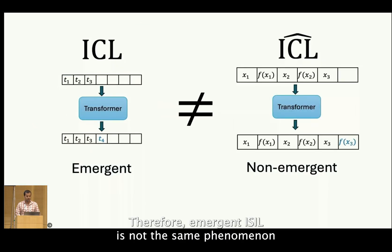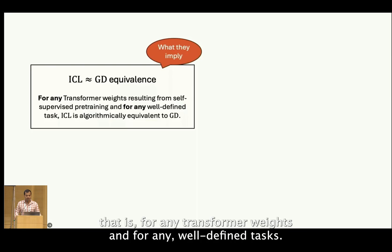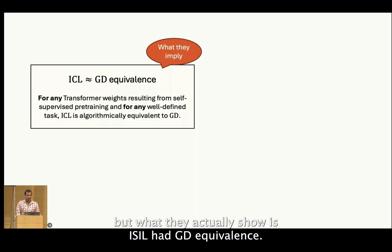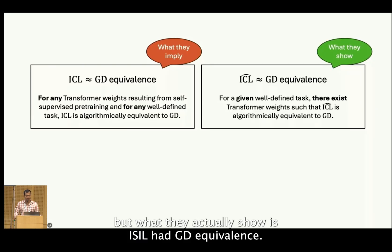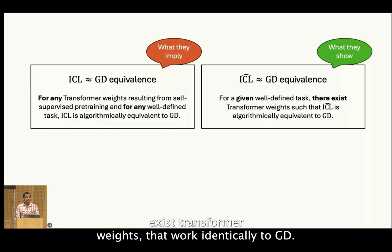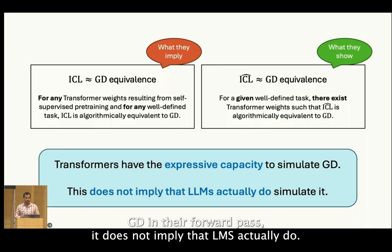Therefore, emergent ICL is not the same phenomenon as the artificial ICL-hat. What these works imply is the ICL-GD equivalence — that for any transformer weights and for any well-defined tasks, ICL and GD are algorithmically equivalent. But what they actually show is the ICL-hat-GD equivalence: for a given well-defined task or function class, there exist transformer weights that work identically to GD. Therefore, even though recent work shows that transformers can express GD in their forward pass, it does not imply that LLMs actually do.